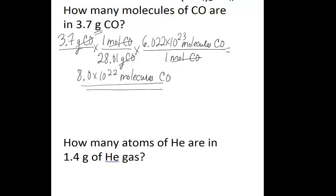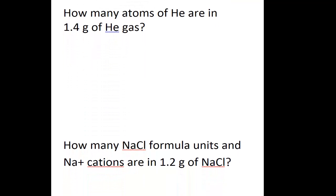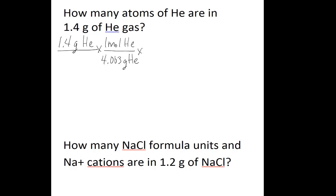The second question asks: how many atoms of helium are in 1.4 grams of helium gas? You do this problem in a similar way. You start with 1.4 grams of helium, and then you use the molar mass of helium to get from grams to moles — so that tells you that in one mole of helium, you have 4.003 grams of helium. You get that number from the atomic mass of helium on the periodic table.